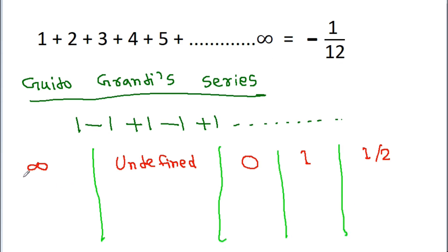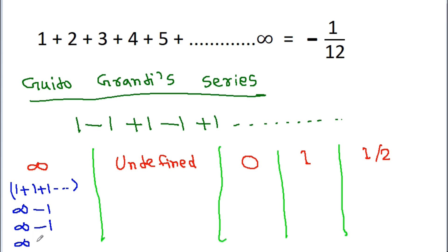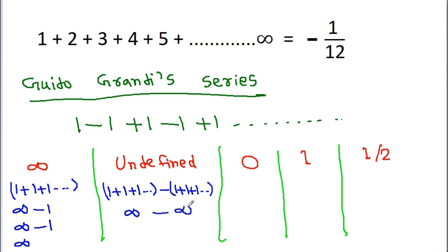The reason behind infinity is if we add all positive terms — 1 plus 1 plus 1 and so on — we get infinity, and subtracting each negative term still gives infinity. The reason behind undefined is adding all positive terms gives infinity and adding all negative terms gives negative infinity, so we get infinity minus infinity, which is undefined.